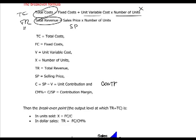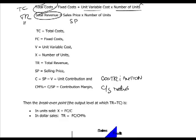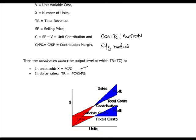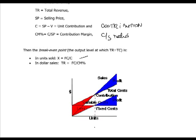Contribution is the selling price minus variable costs. The contribution-to-sales (C/S) ratio is the contribution divided by the selling price. The break-even point can be determined in terms of units as fixed costs divided by contribution per unit, or in sales value as fixed costs divided by the C/S ratio. Graphically, the break-even point occurs where contribution equals fixed costs.